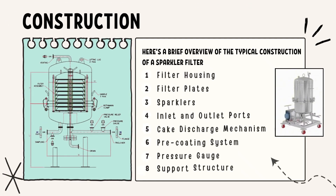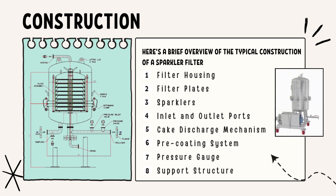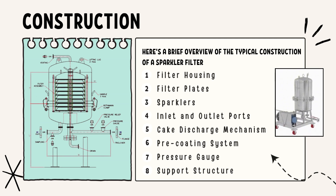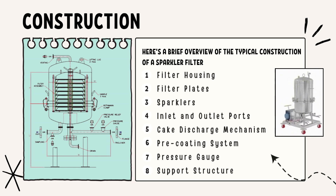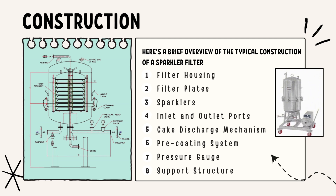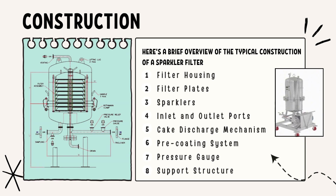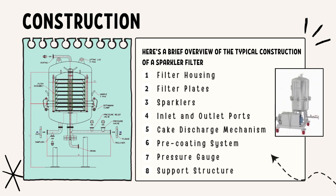Now we will look at the construction of the sparkler filter. The construction involves key components that work together to facilitate the filtration process. The first component is the filter housing — the main structure is a cylindrical or horizontal vessel that houses the filter plates and other components, typically made of stainless steel to withstand pressure and corrosive fluids. The second component is filter plates — horizontal plates mounted inside the filter housing, often made of stainless steel and covered with a filter medium such as filter cloth or filter paper, designed to allow cake layer formation.